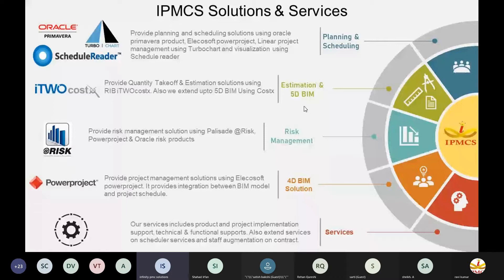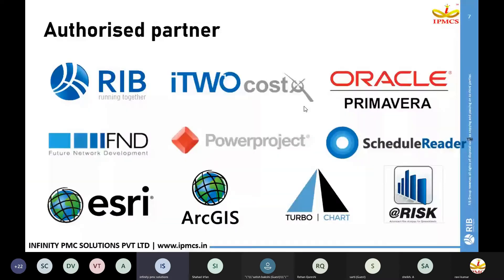For 4D BIM, we provide a project management solution using Elecosoft Power Project, where you can integrate your BIM models and project schedule for achieving 4D BIM. Our other services include product and project implementation, technical and functional support, and we also extend scheduler services and staff augmentation on contract basis. We are an authorized Indian partner with RIB for I2 Costex, Oracle Primavera, Power Project with FND, Schedule Reader, TurboChart, At Risk, and ArcGIS with SRT.